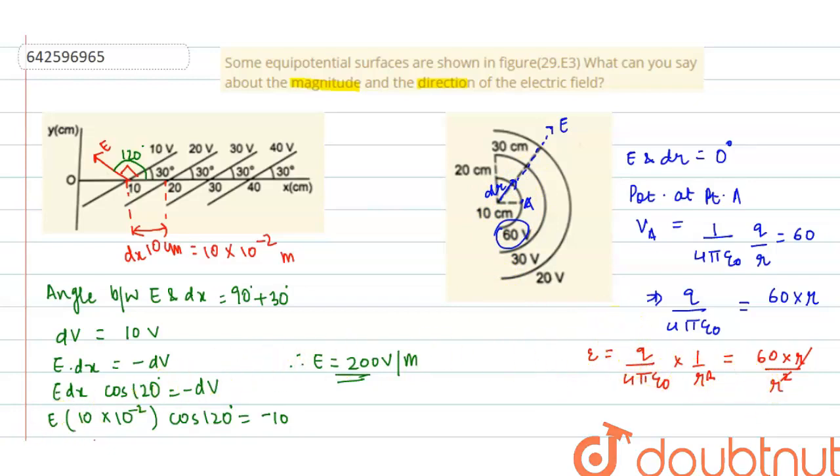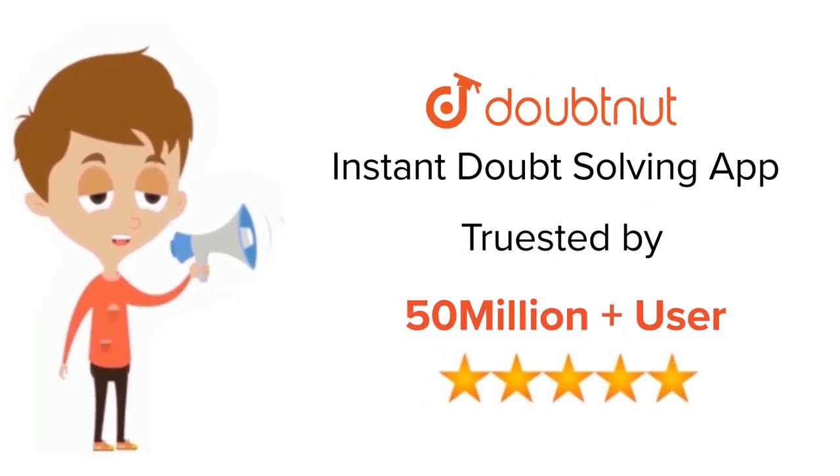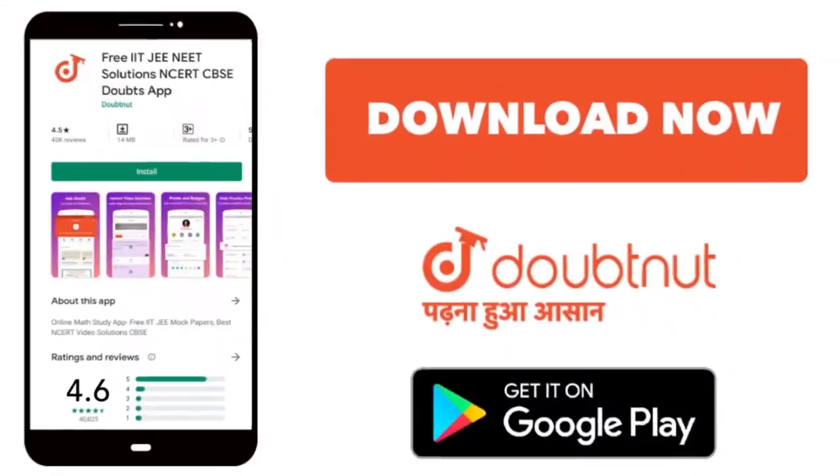Hence, the electric field is radially outwards and decreasing with the increase in the distance. Okay, thank you. For class 6 to 12, IIT, and NEET level, trusted by more than 5 crore students, download Doubtnut app today.